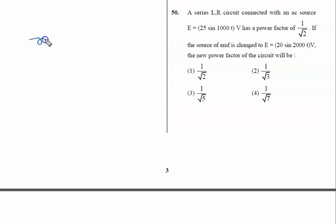A series LR circuit - this is L and this is R connected with an AC source. The EMF of the AC source is given by E = E₀ sin ωt, so that is 25 sin 1000t.